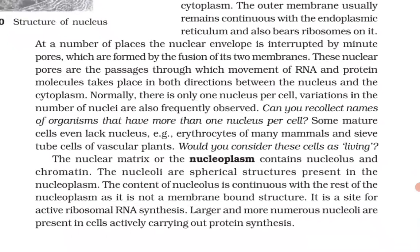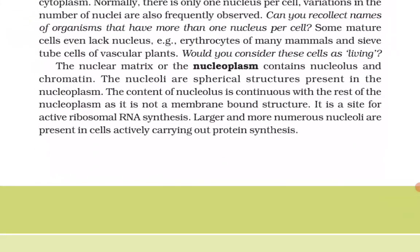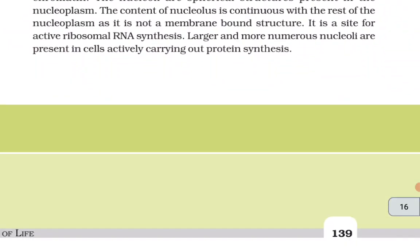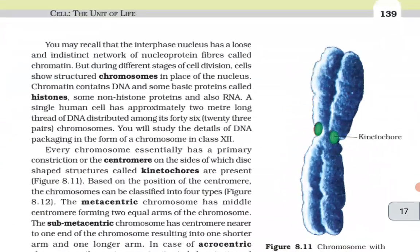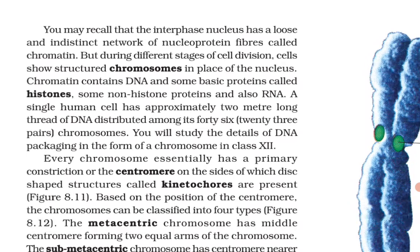Some mature cells even lack a nucleus — for example, erythrocytes of many mammals and sieve tube cells of vascular plants. The nuclear matrix or nucleoplasm contains the nucleolus and chromatin. The nucleoli are spherical structures present in the nucleoplasm. The content of nucleolus is continuous with the rest of the nucleoplasm as it is not a membrane-bound structure. It is the site for active ribosomal RNA synthesis. Larger and more numerous nucleoli are present in cells actively carrying out protein synthesis.